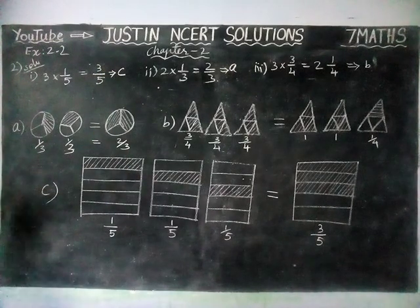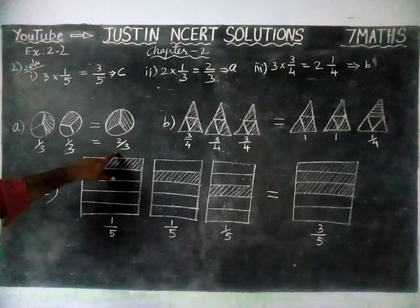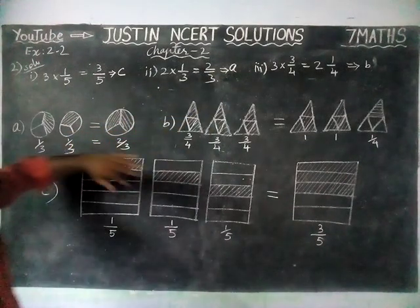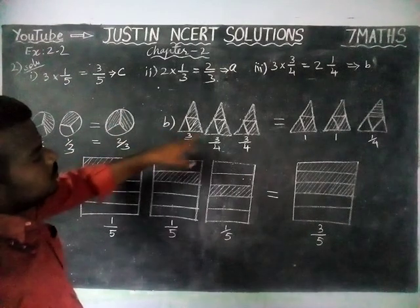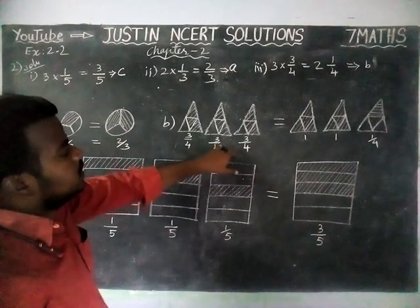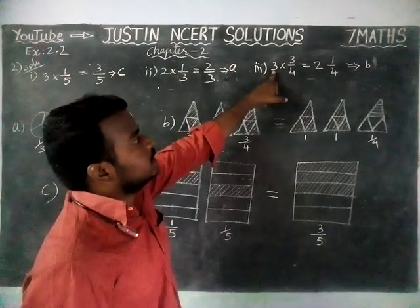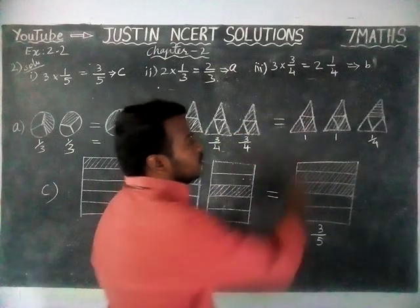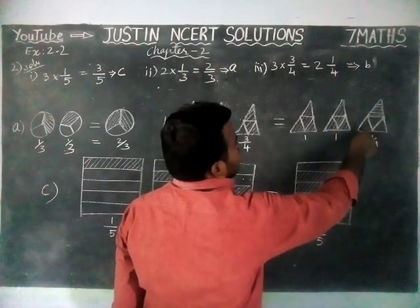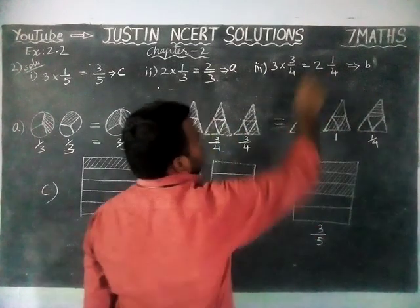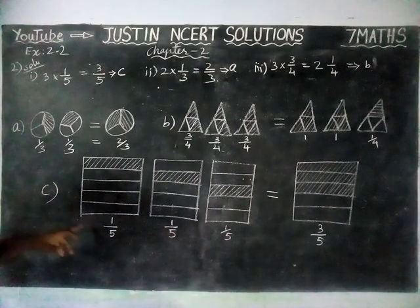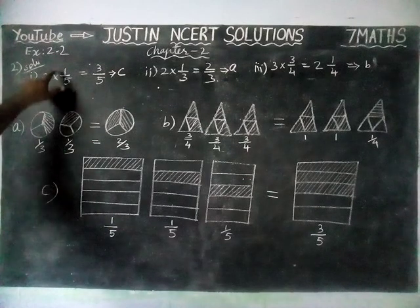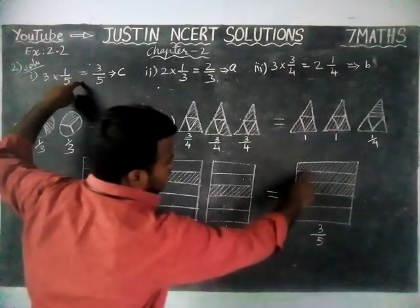And first question: one by three plus one by three is equal to two by three — second question is equal to Option A. Next, third question: next Option B — three by four, three by four, three by four — three into three by four is equal to two and one by four, two whole triangles and one by four triangle. And here we have one by five, one by five, one by five — so three into one by five is equal to three by five.